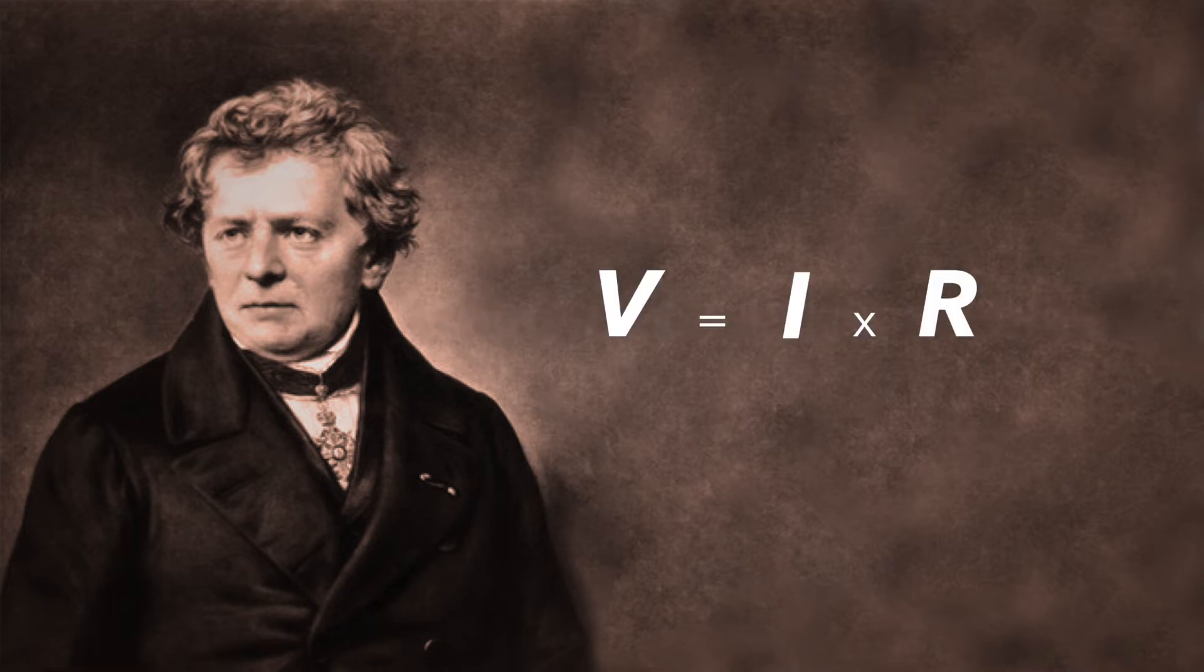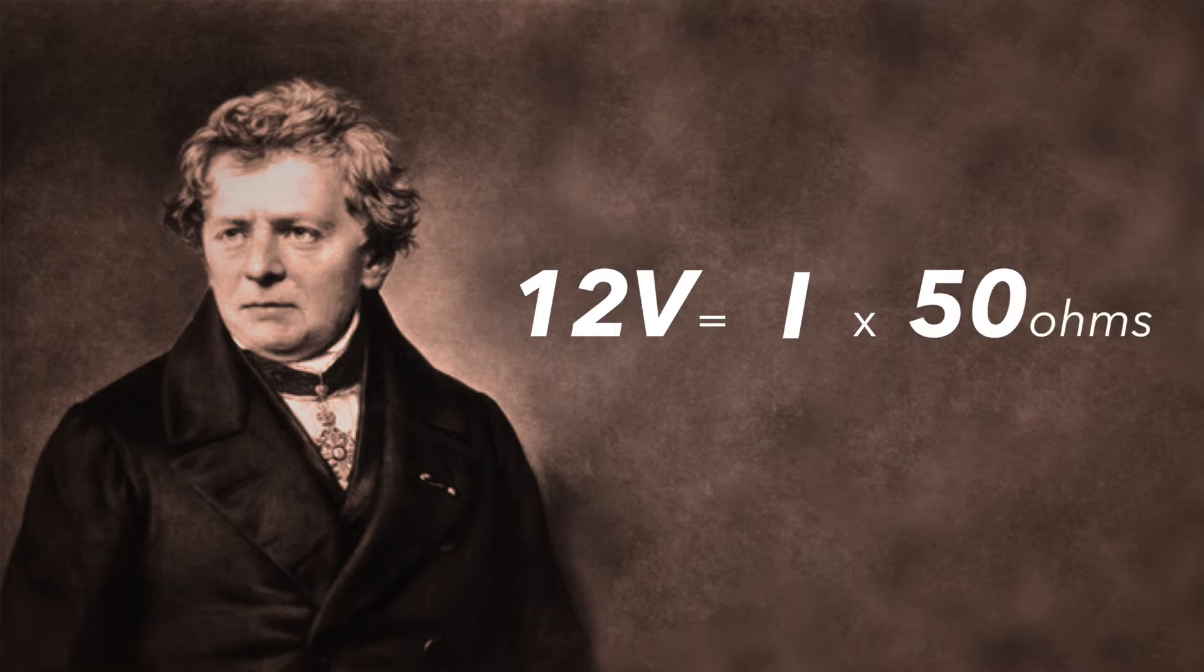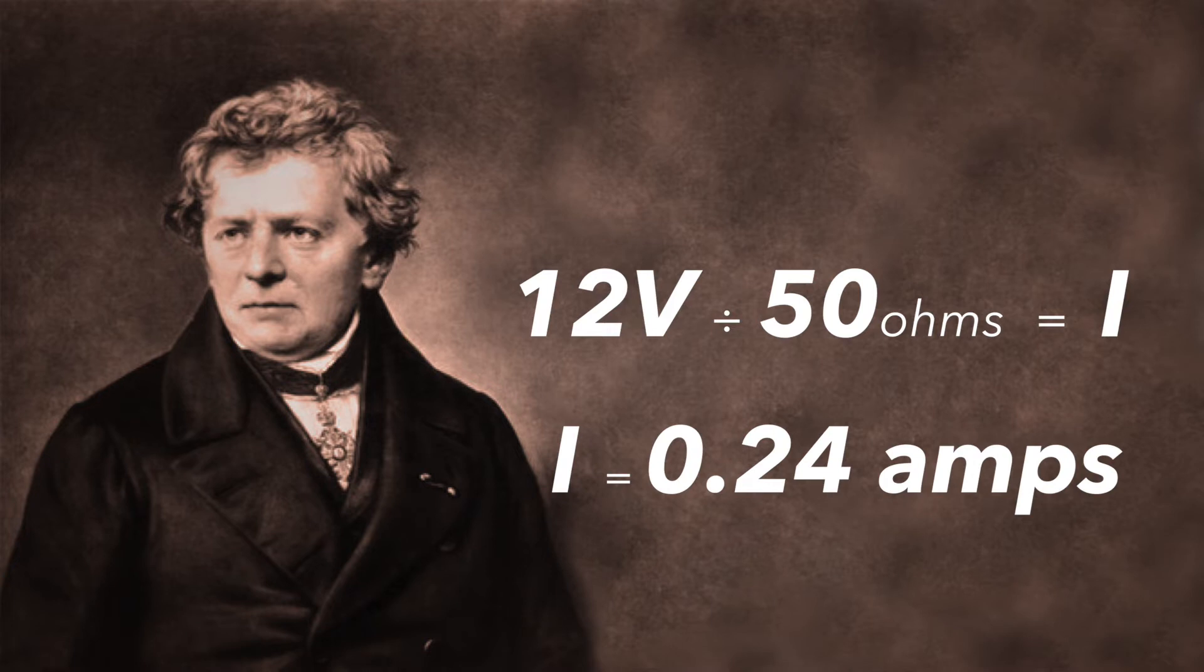We know that our circuit has a 12V power supply, and that the resistor is 50 ohms. With those two numbers, we find out that the current running through the circuit is 0.24A, or 240mA.